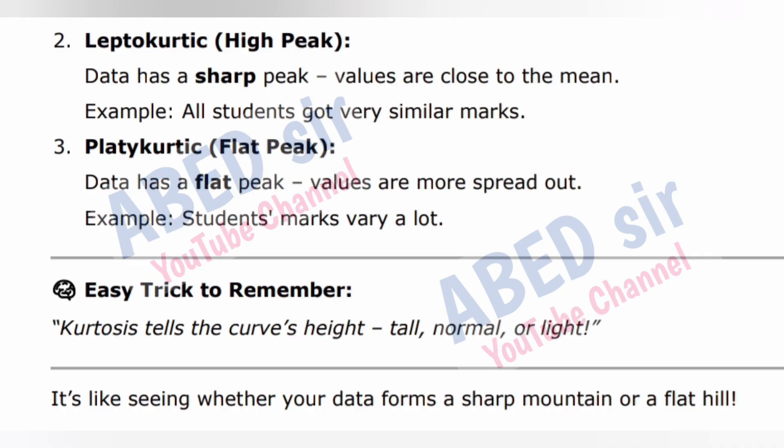Example of leptokurtic: all students got very similar marks. 3. Platykurtic (flat peak) — data has a flat peak; values are more spread out. Example: students' marks vary a lot. Easy trick: Kurtosis tells the curve's height — tall, normal, or light. It's like seeing whether your data forms a sharp mountain or a flat hill.